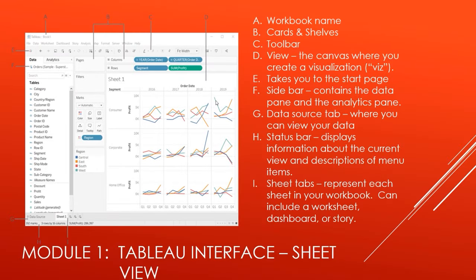Here's our breakdown of sheet view in Tableau. Starting at the top, you have your workbook name. Where it says Pages, Filters, Marks — this panel, as well as Columns and Rows up top — those are either called cards or shelves. Technically speaking, Columns, Rows, Pages, and Filters are known as shelves, and the Marks card is known as a card. The terms are used interchangeably — doesn't matter what you call them as long as you know how to use them.